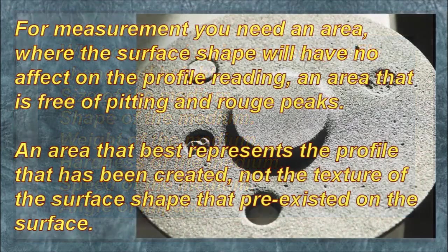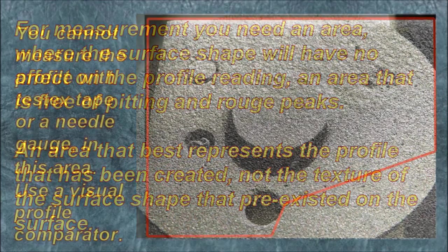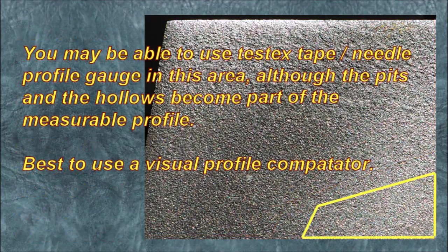For measurement, you need an area where the surface shape will have no effect on the profile reading — an area that is free of pitting and rogue peaks, and an area that best represents the profile that's been created, not the texture of the surface shape that pre-existed. You cannot measure the profile with Testex tape or a needle gauge in this area. Use a visual profile comparator.